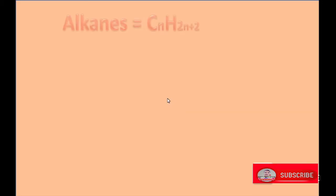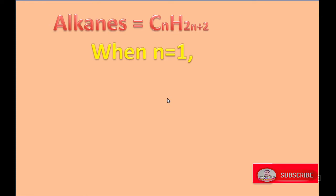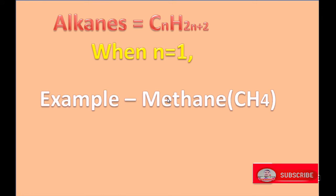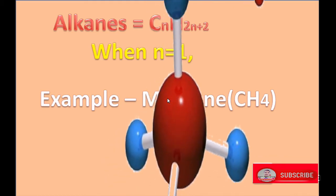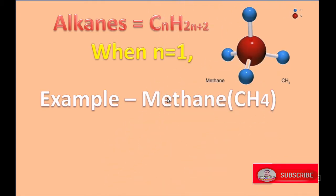Alkanes have the general formula CnH2n+2. When N equals 1, the hydrocarbon is methane, having molecular formula CH4, with a structure in which carbon is bonded with 4 hydrogen atoms.